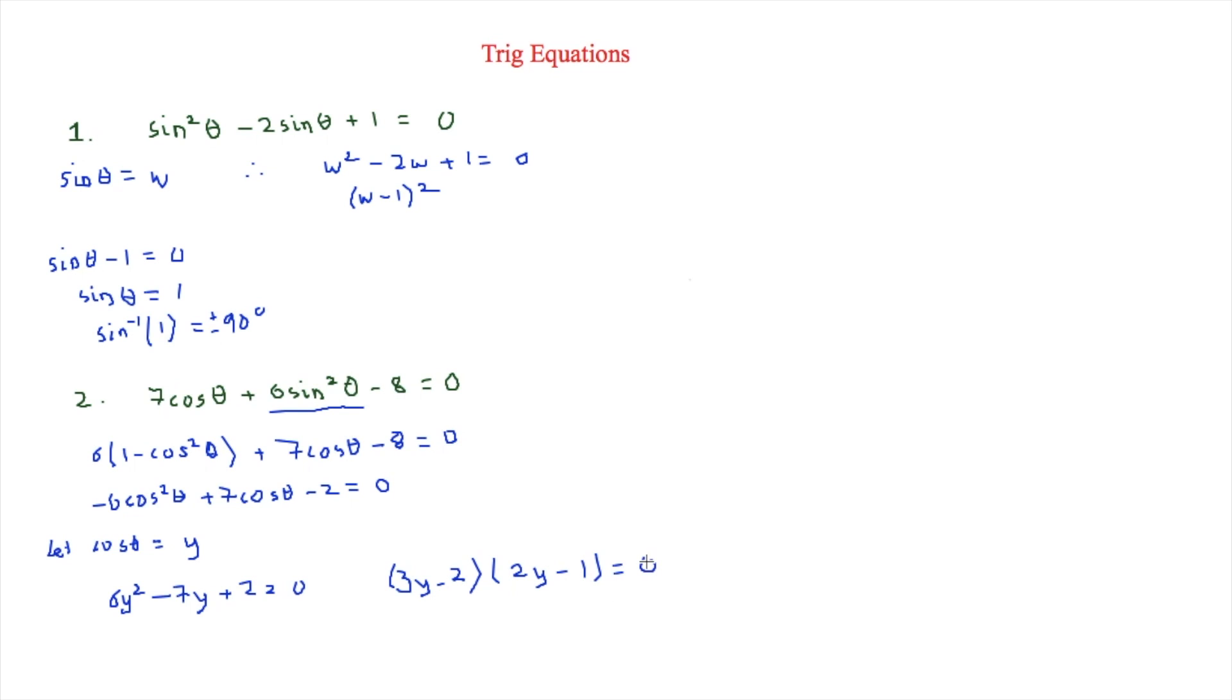And that is equal to 0. And again, we'll replace the y back with the cos theta. So therefore, for the first one, we'll have 3 cos theta minus 2 is equal to 0.